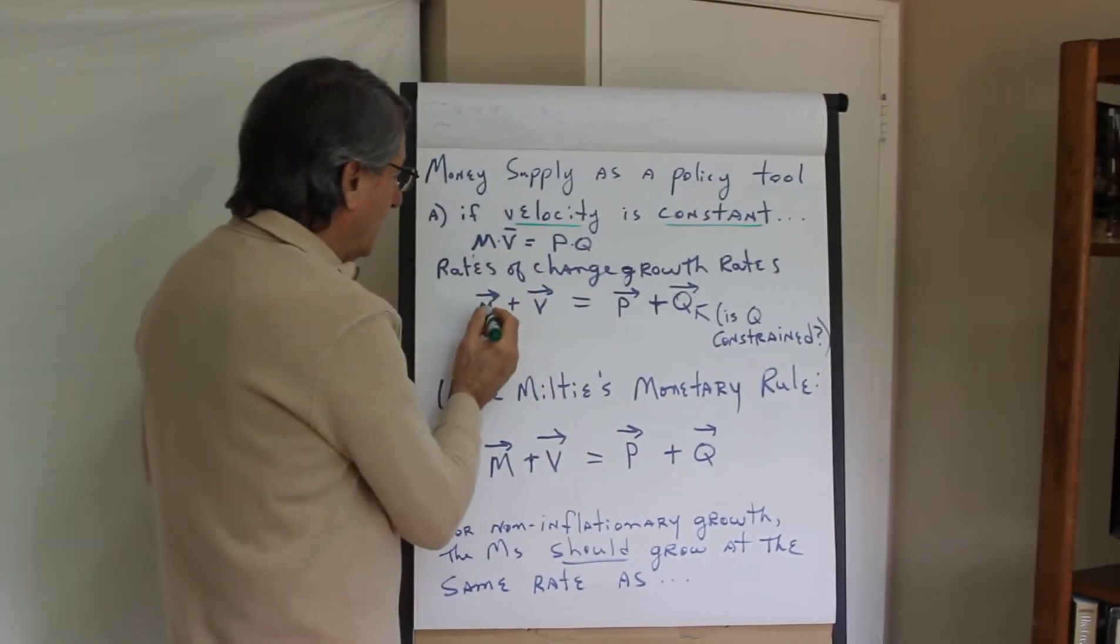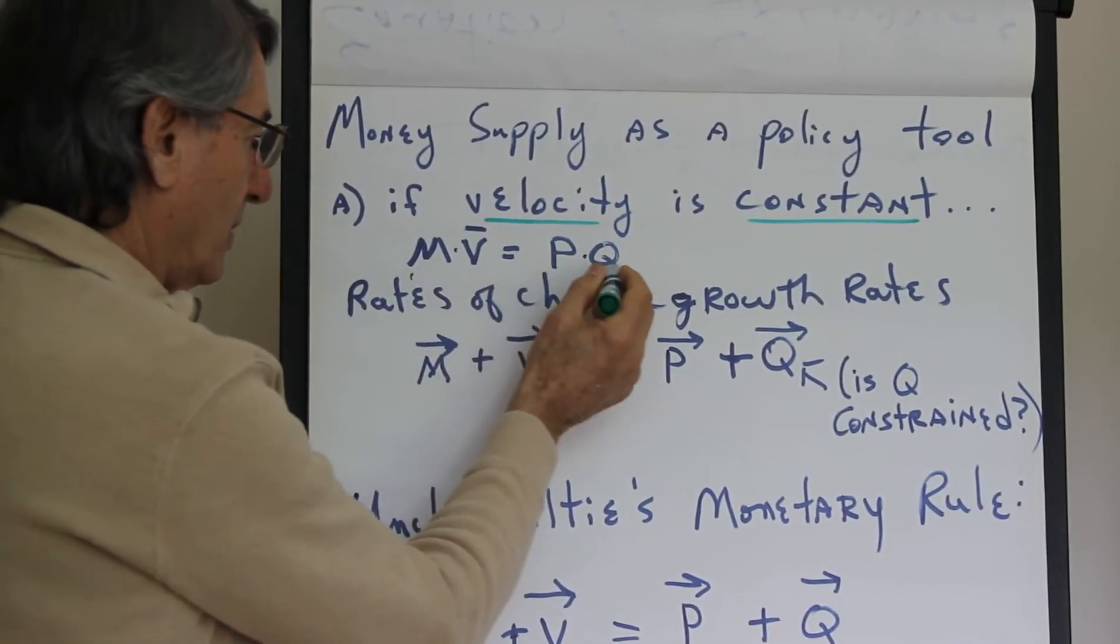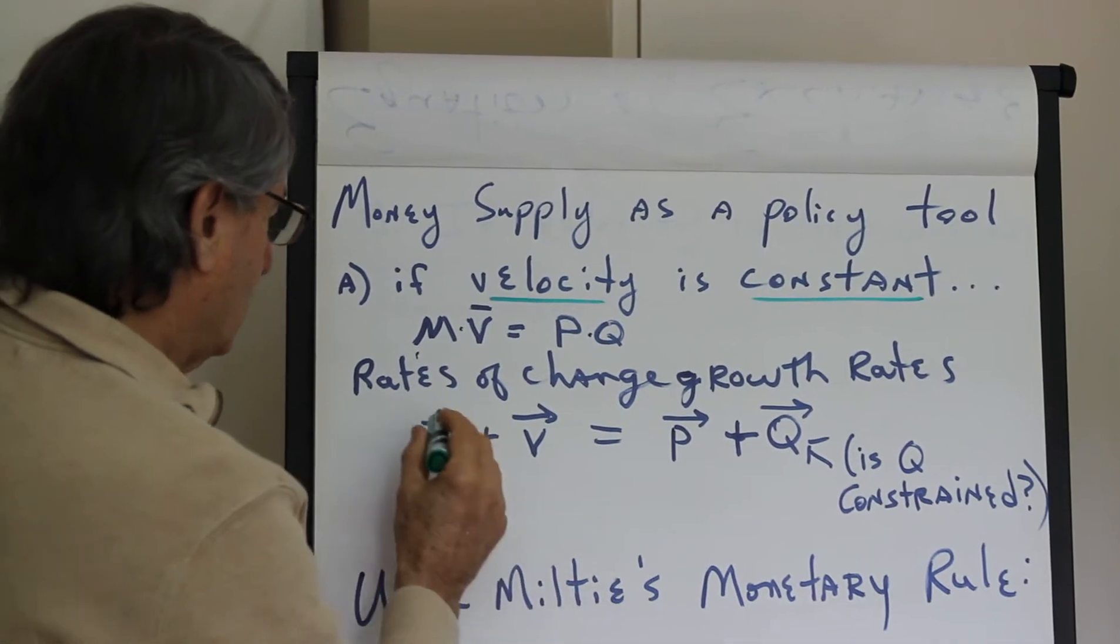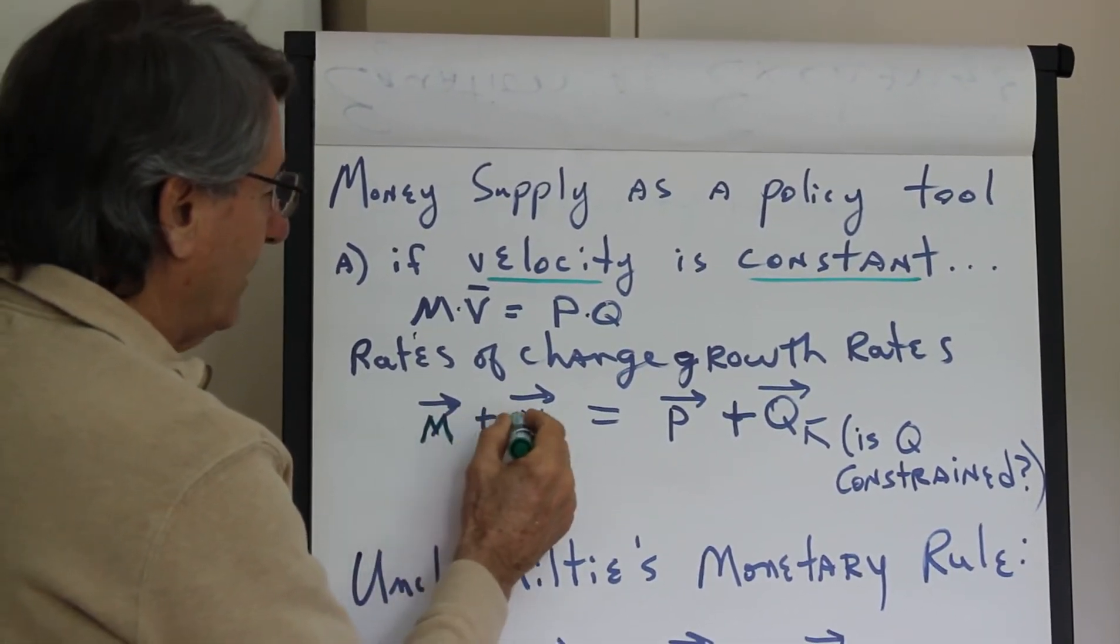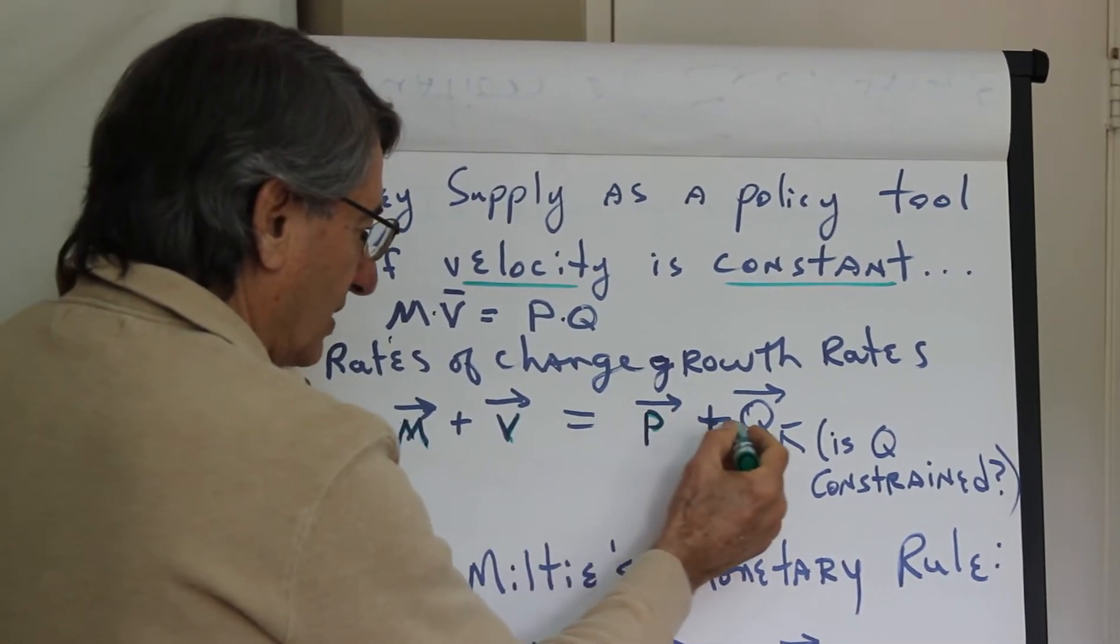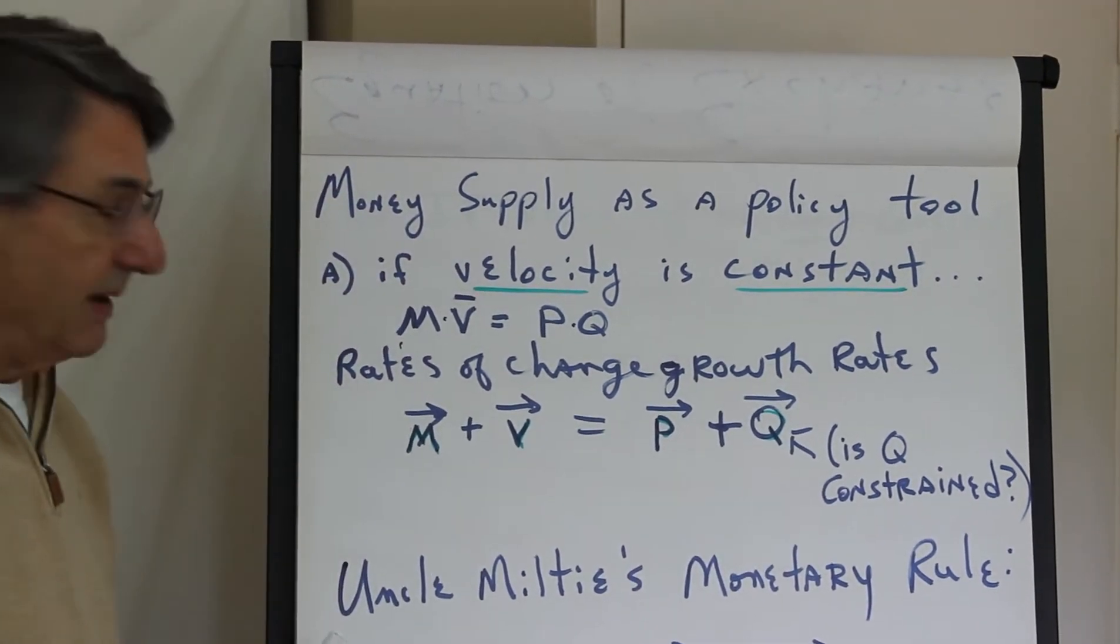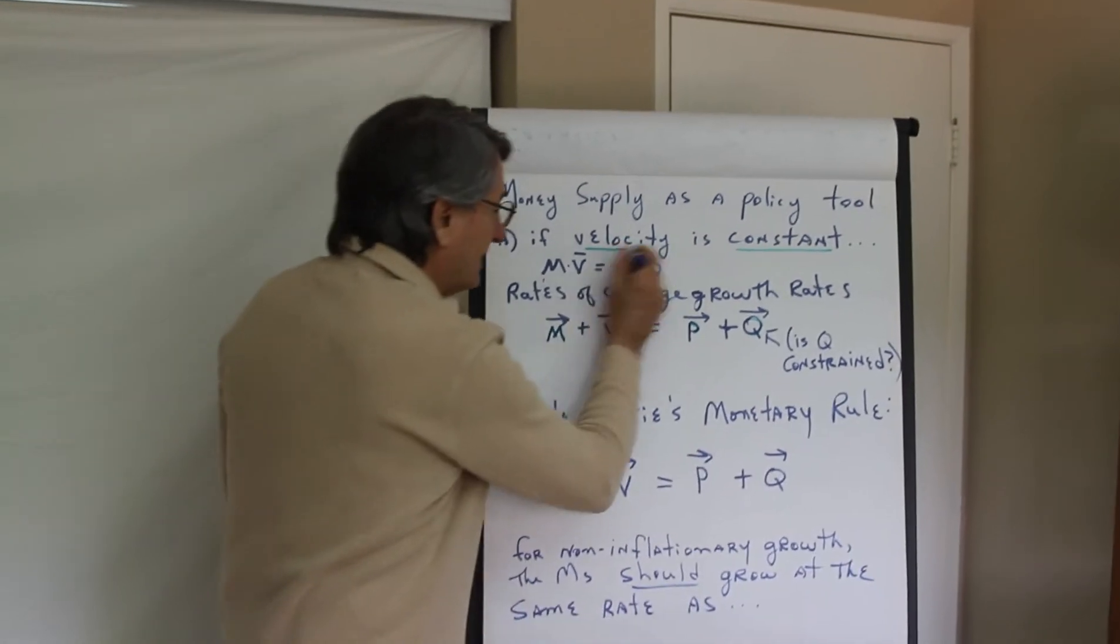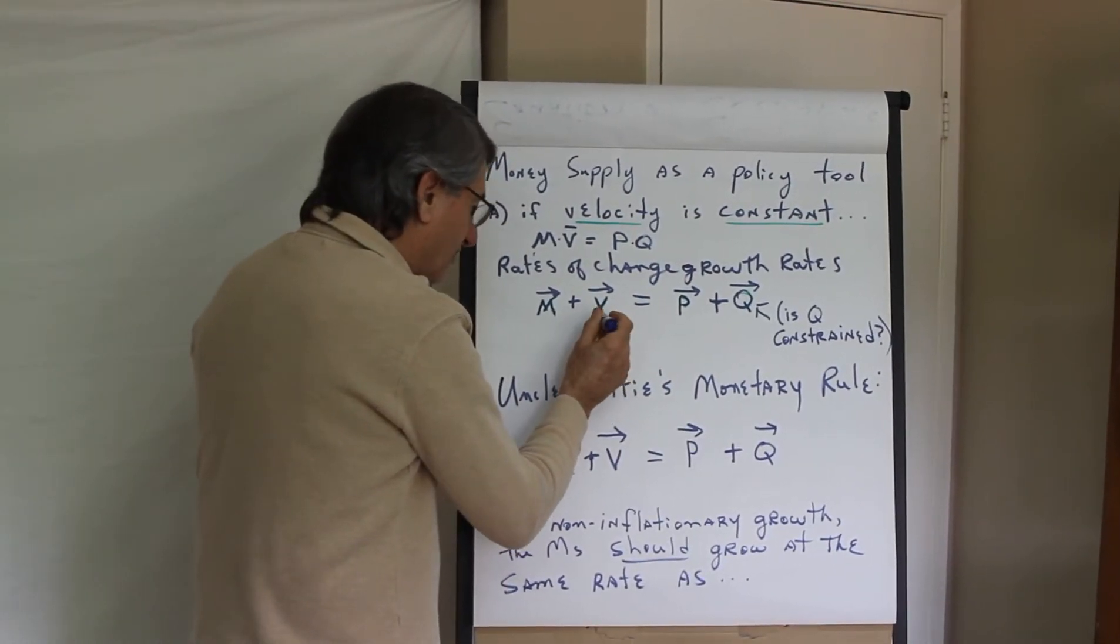Let's change this MV equals PQ, money times velocity equals price times real GDP or real quantity, and change it to rates of change. The rate of change of the money supply plus the rate of change of velocity must equal the rate of change of the price level plus the rate of change of real GDP.